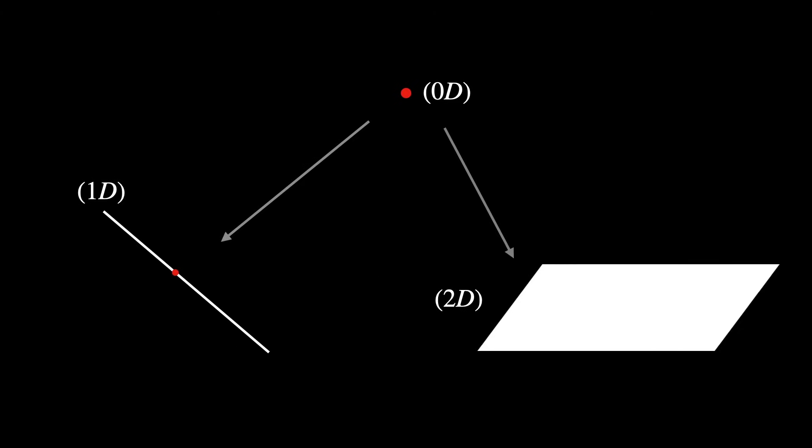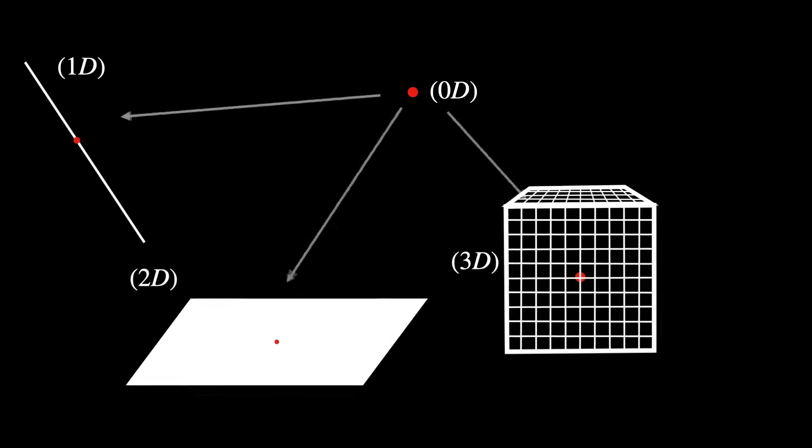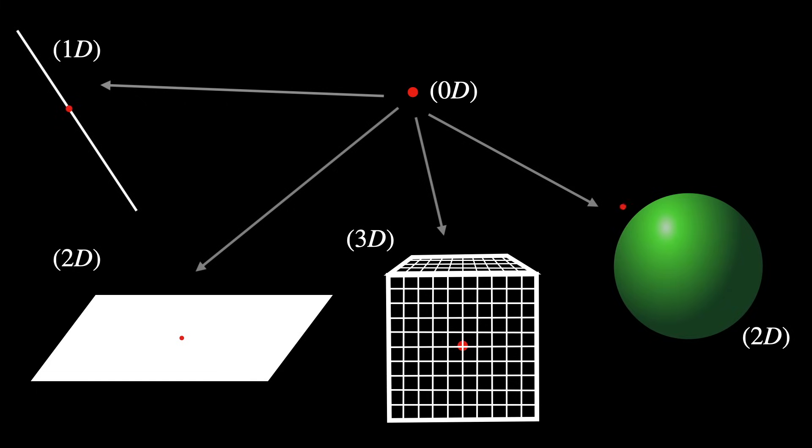So, for example, you could embed a point, which is zero-dimensional, into a line, which is one-dimensional. You could embed it into a plane, 2D, or into a cubic region, 3D, or into the surface of a sphere, 2D, or even into another point, 0D, and so on.